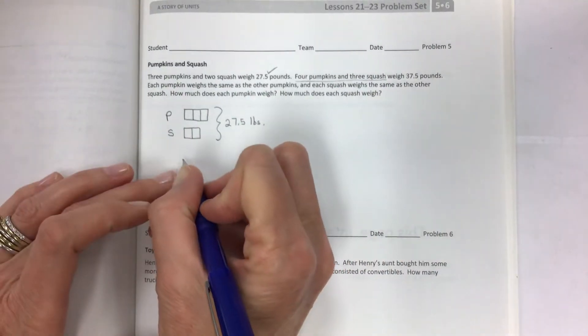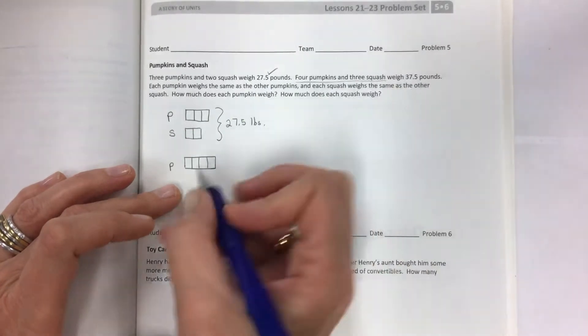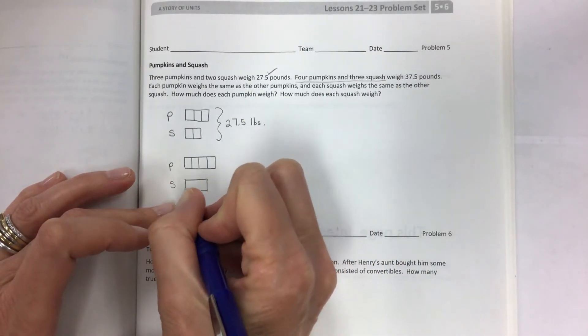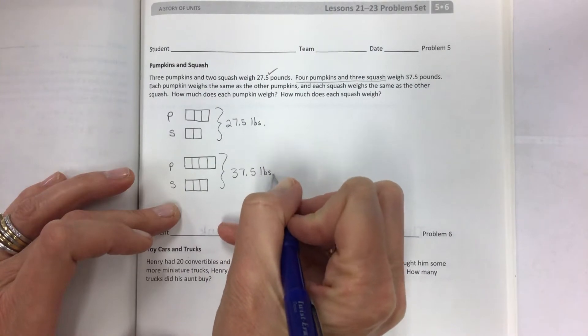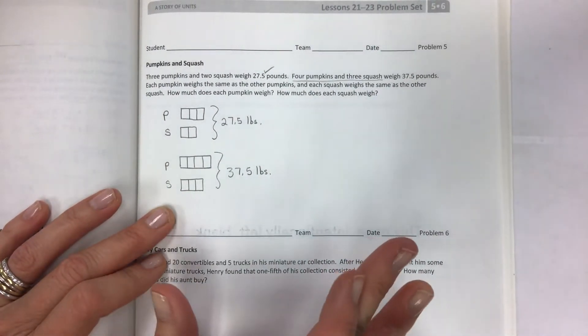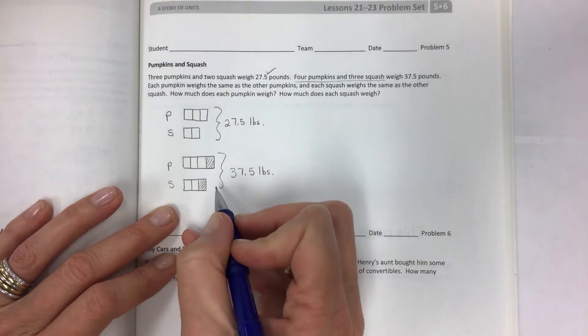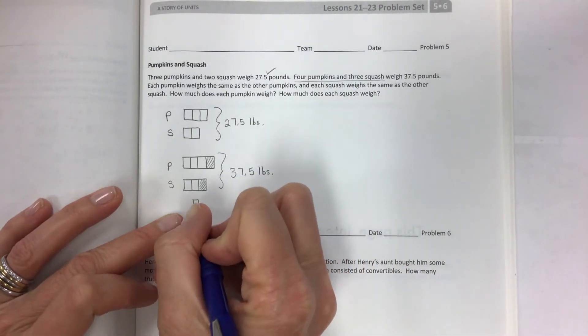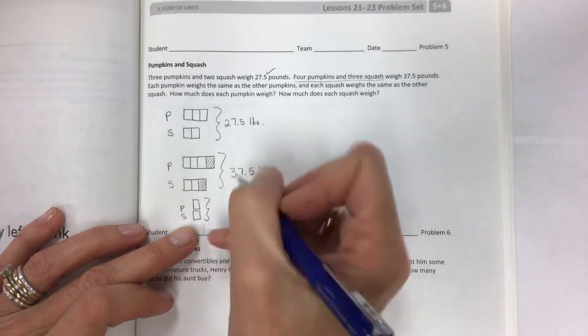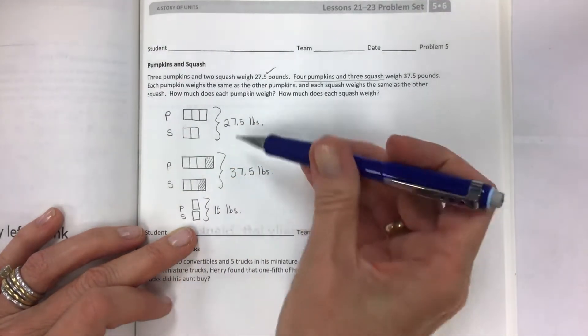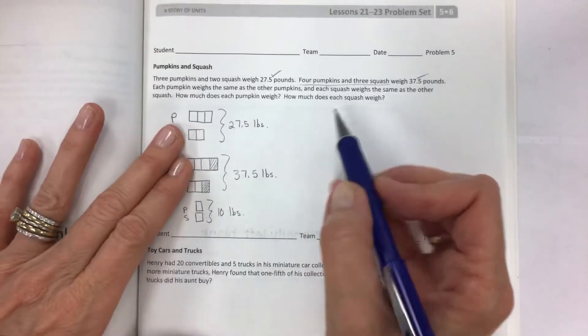Those two items weigh 27.5 pounds. Now let's check this out. So four pumpkins and three squash weigh 37.5 pounds. Here we have the difference of one pumpkin and one squash.